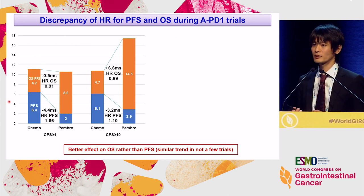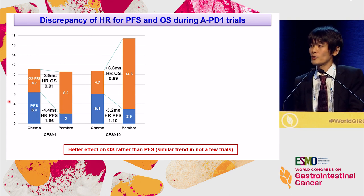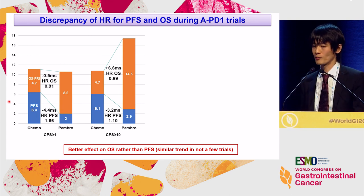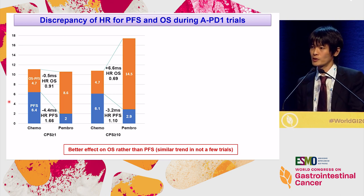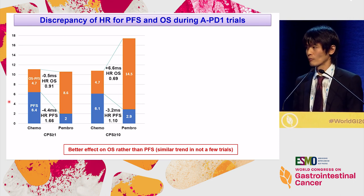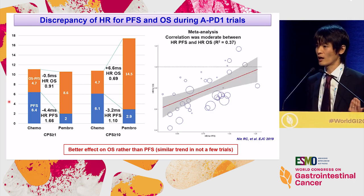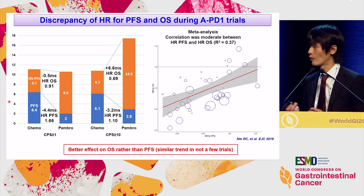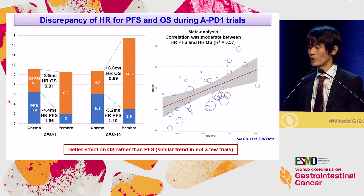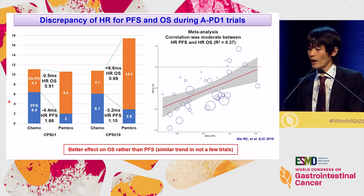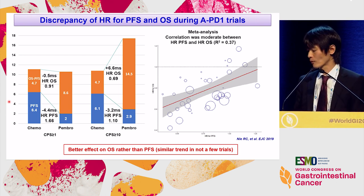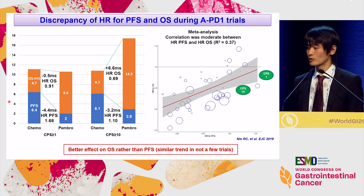One of the interesting characteristics of Keynote 62 is the discordance between PFS and overall survival. Even in the CPS10 patient population, median PFS was three months shorter with Pembrolizumab than chemotherapy. In contrast, median overall survival showed a six-month improvement. This kind of discordance between overall survival and PFS has also been reported from other clinical trials with checkpoint inhibitors. Hazard ratios in overall survival are generally better than those of PFS, and the correlation between PFS and overall survival is very low. The Keynote 62 results are therefore not an outlier.